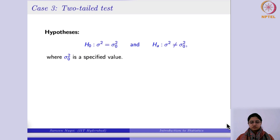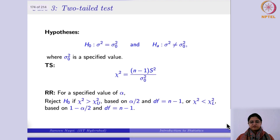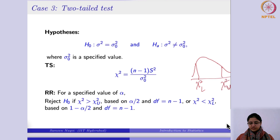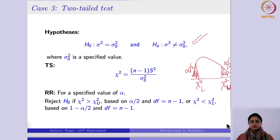For the two-tailed test, the rejection region falls in both directions. You have chi²_L on the lower tail and chi²_U on the upper tail, each with area alpha/2. If the test statistic falls in either shaded portion, you reject the null hypothesis and conclude that the alternative is true — meaning the variance is actually different from the hypothesized population variance.